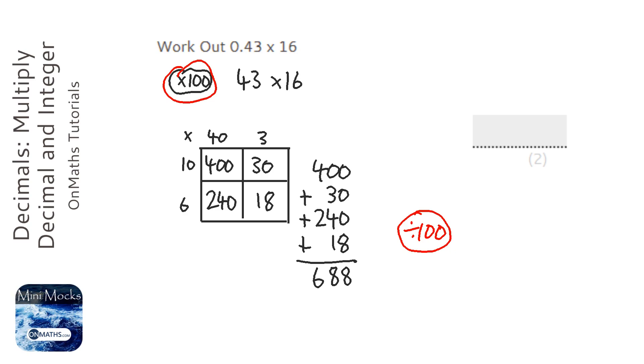So we know that 43 times 16 is 688. Therefore, 0.43 times 16 will be 100 times smaller. So that's going to be 6.88.